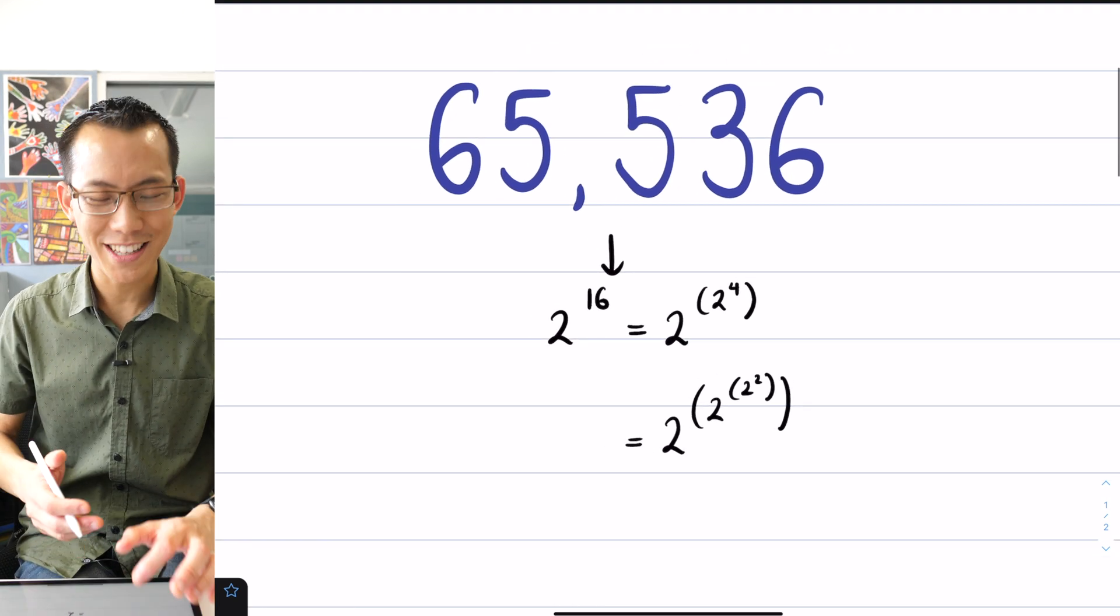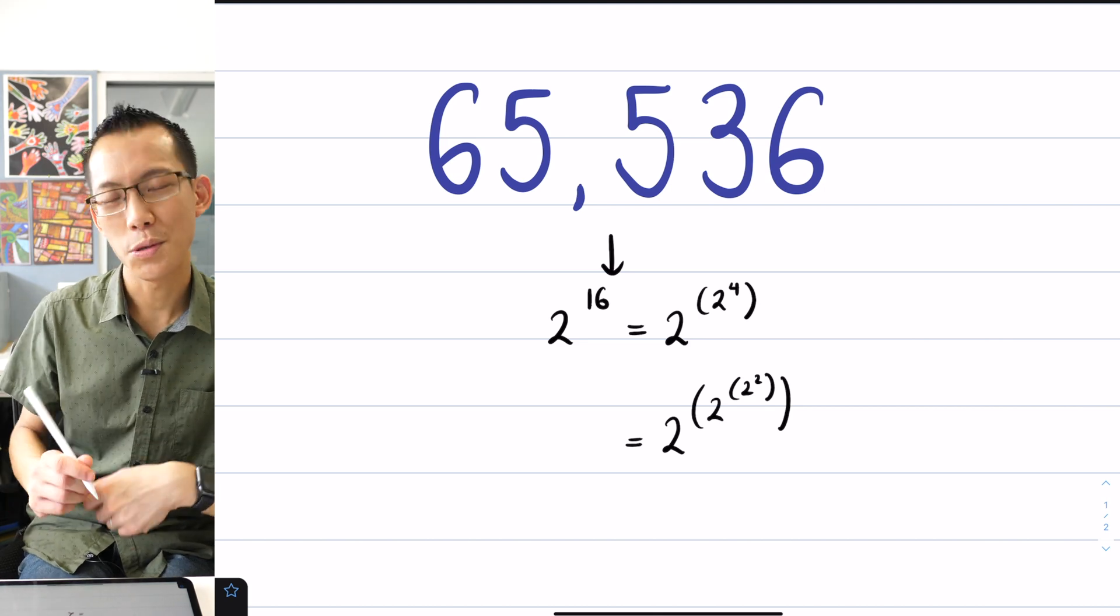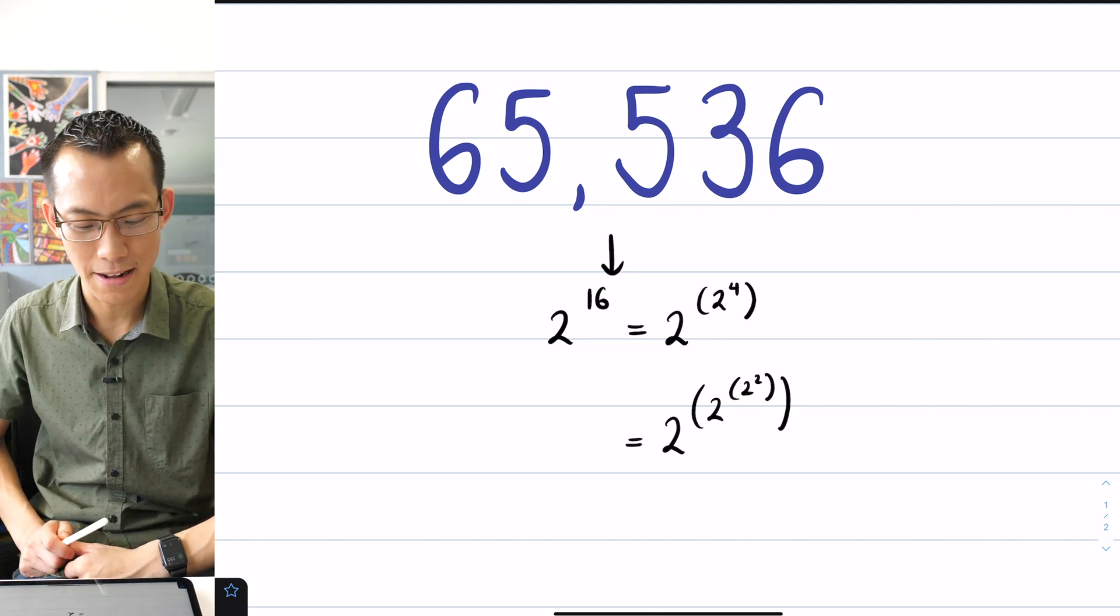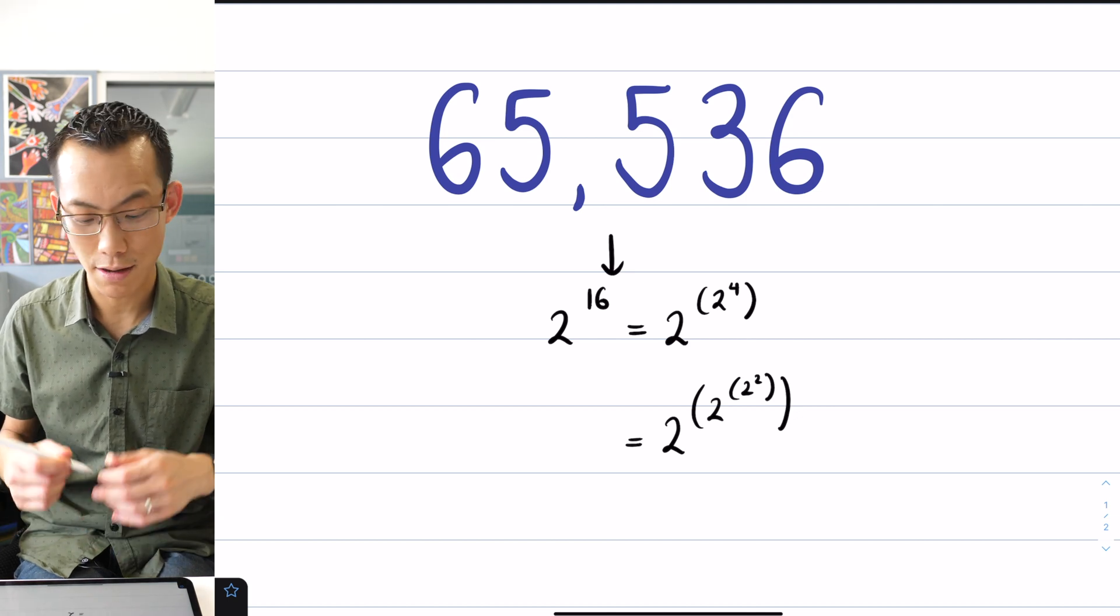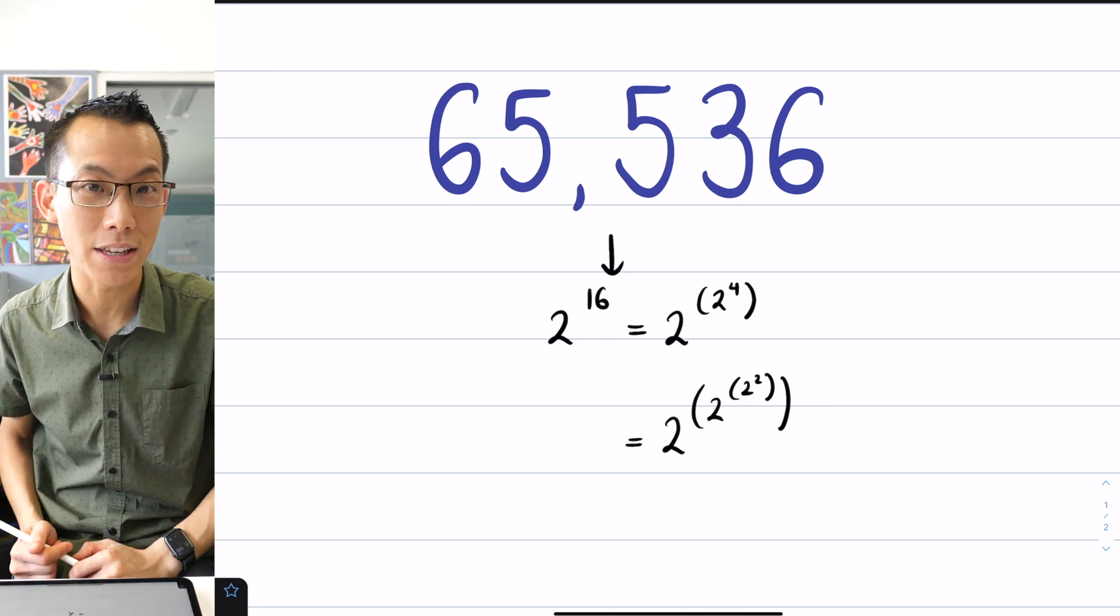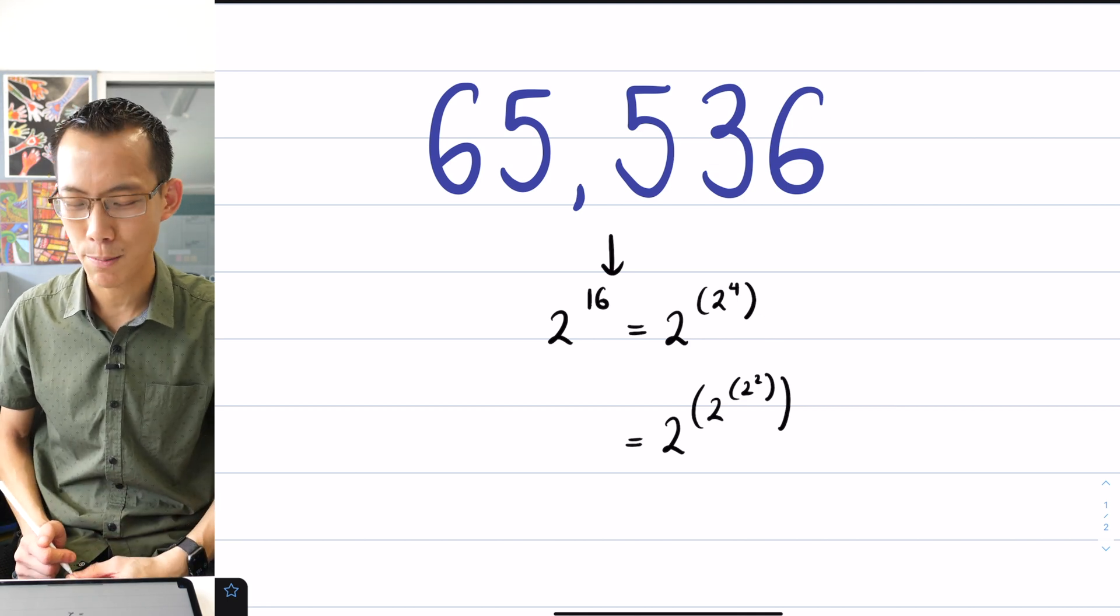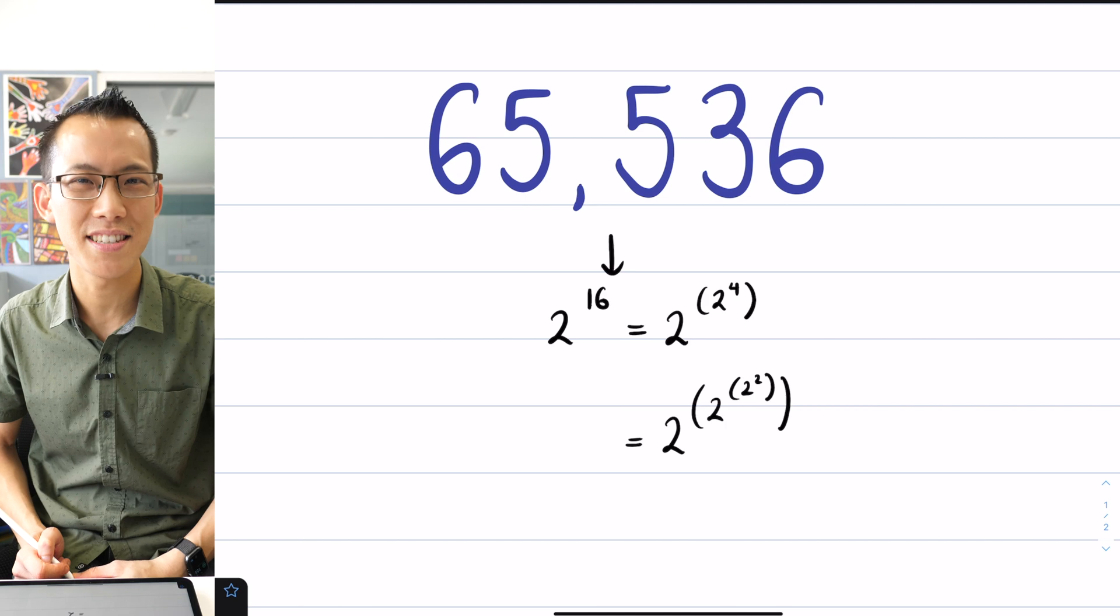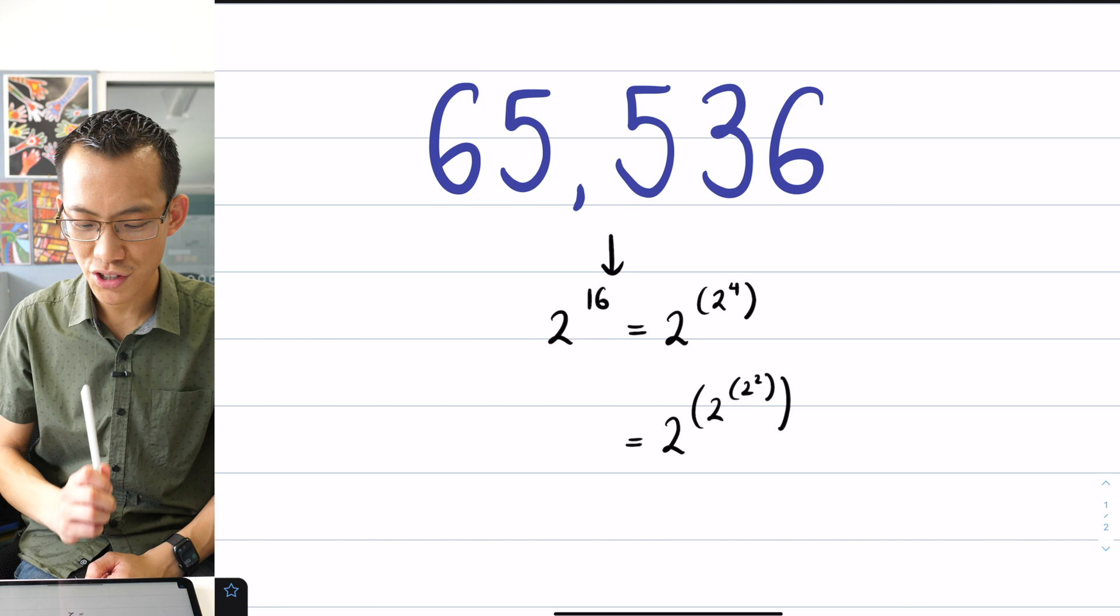So not only can you write 65,536 as this kind of tower of twos, it also has a really cool property that for me is incredibly counterintuitive and really hard to guess, but you can see it right by looking at the number just by paying attention to its digits. I wonder if you can spot what is unusual about 65,536 as a power of two. Have a look at the digits.